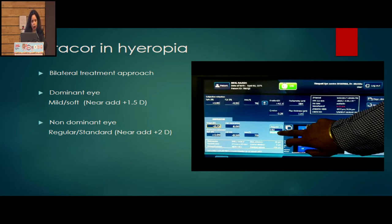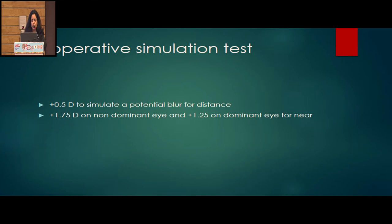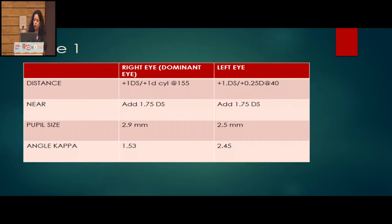In hyperopia we use a bilateral treatment approach: dominant eye gets a mild or soft SupraCore correcting up to 1.25–1.5 D, non-dominant eye gets regular SupraCore correcting up to +2 D. In myopia we generally use a monolateral approach: regular SupraCore in the non-dominant eye correcting up to +2 D, and standard LASIK in the dominant eye. All treatment decisions are based on a pre-operative simulation test — we place 0.5 D in front of the patient's distance BCVA. If the patient is not comfortable, they are not suitable for SupraCore.